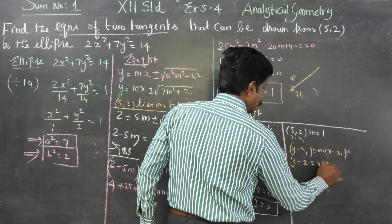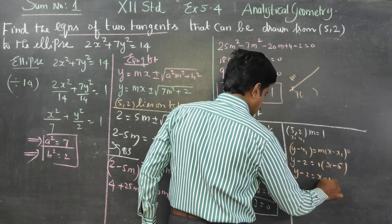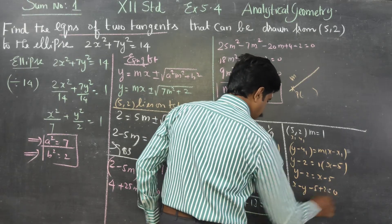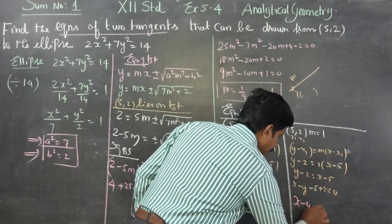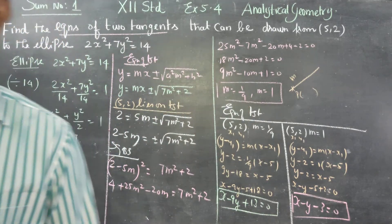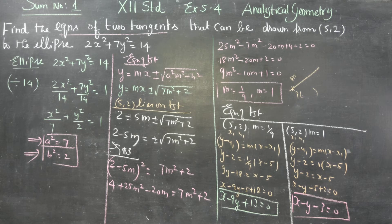Case 2, m = 1: y - 2 = 1·(x - 5), so y - 2 = x - 5, giving x - y - 3 = 0. This is the second equation of tangent. Therefore, the two tangents are x - 9y + 13 = 0 and x - y - 3 = 0.